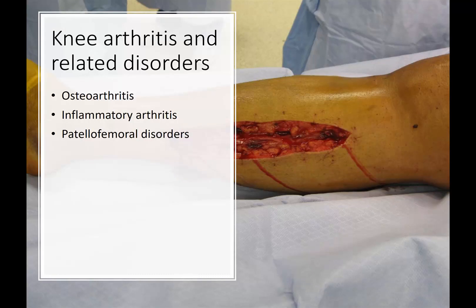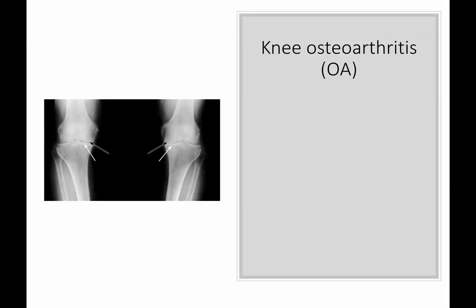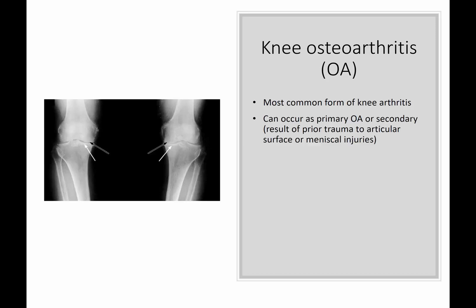Let's start off with knee arthritis and related disorders. There are three main things to be aware of, but we're only going to cover two — we'll leave inflammatory arthritis for the rheumatology specialists. Knee osteoarthritis: orthopedic surgeons do get quite involved with its management, and there's some surgical treatment you should be aware of. It is the most common form of knee arthritis and can occur as primary osteoarthritis or secondary, which could result from prior trauma to the articular surface.